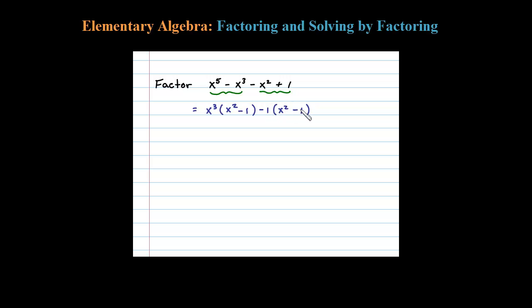Notice here we have what looks like a binomial, something minus something, where they have x² - 1 in common. So let's go ahead and factor out that x² - 1. When I do that, what's left is x³ - 1.